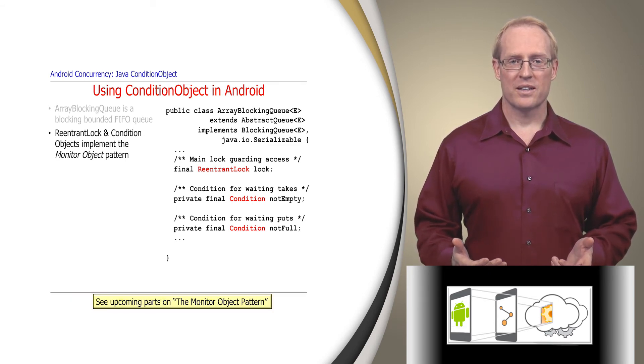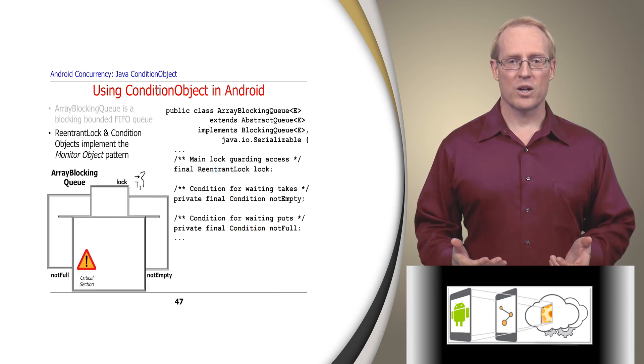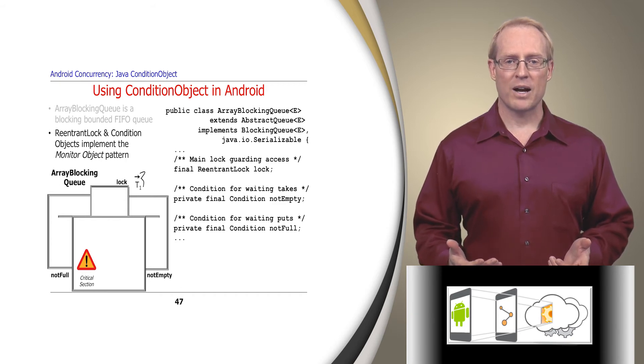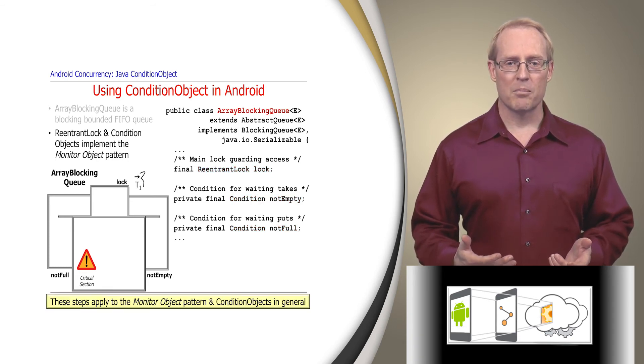Array-blocking-queue uses reentrant lock and condition objects to implement the monitor object pattern, described at this link and discussed later in this module. This diagram shows the structure of the array-blocking-queue monitor object, which we'll use to visualize the analysis of its code. This implementation of monitor object differs from Java's built-in monitor objects because it creates an explicit reentrant lock and multiple condition objects. Although we focus on the array-blocking-queue here, these steps are applicable to the monitor object pattern and condition objects in general.